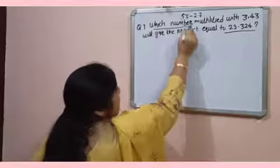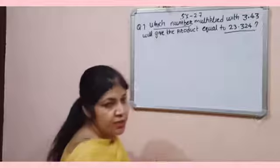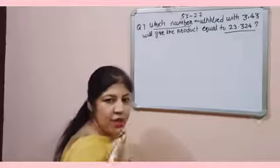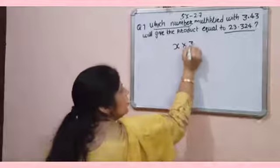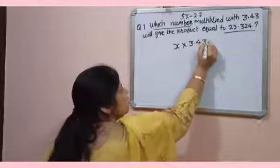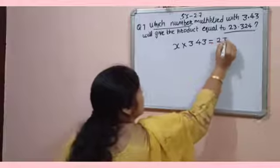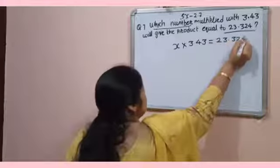Which number multiplied? Number means that number you can take as X multiplied with 3.43 equal to 23.324.